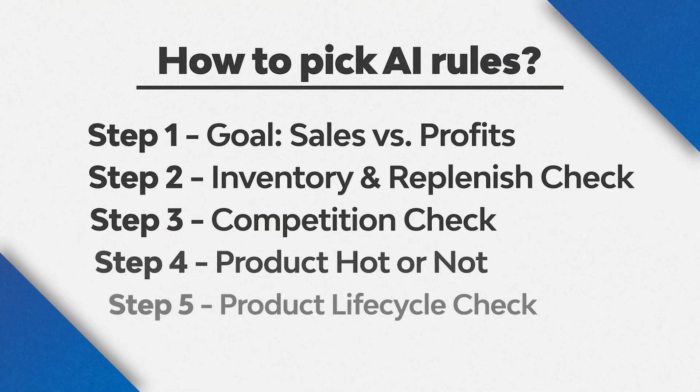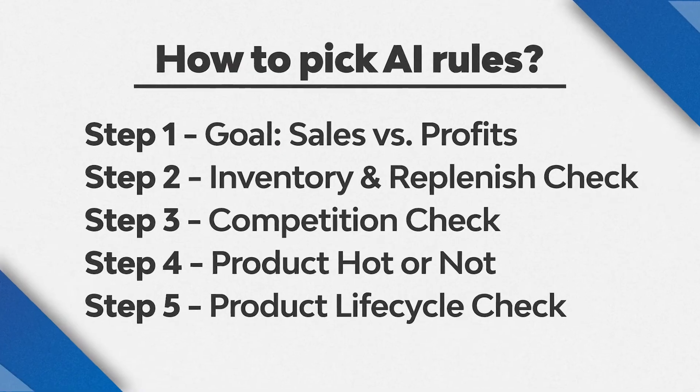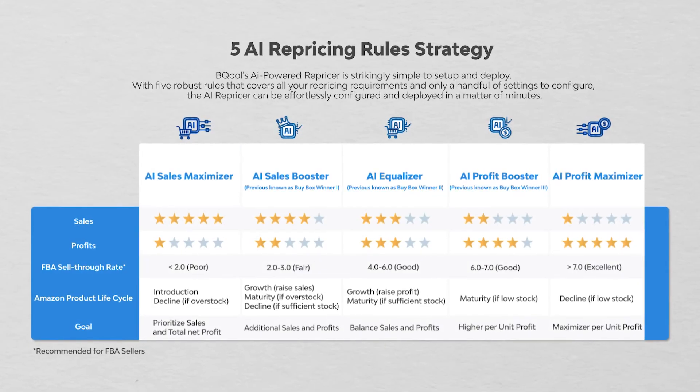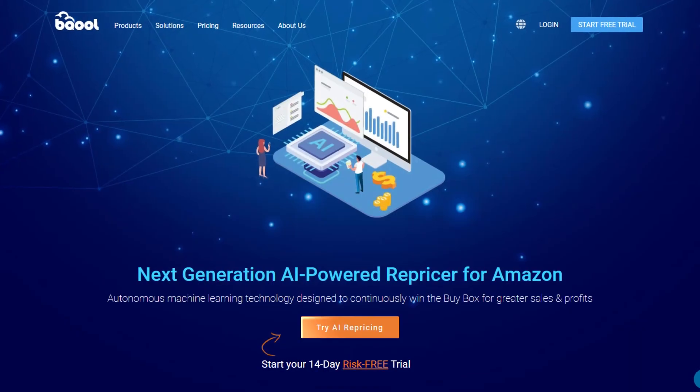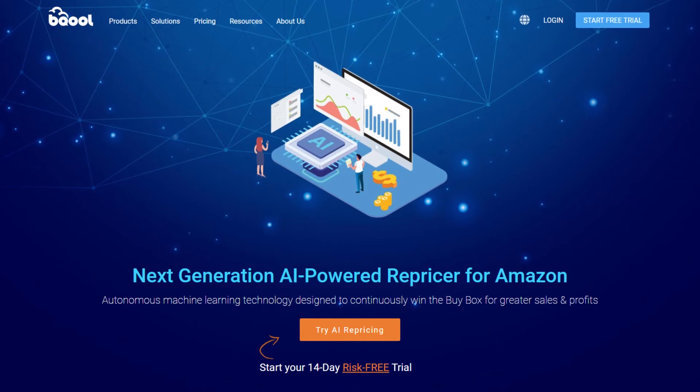In conclusion, our advice is to follow these five steps as a general guideline. If the rule you're using is not getting you the sales, change it to a more aggressive rule. Also keep in mind that sometimes it's not the rule — it's the min price you're setting. If the majority of your competitors are priced below your min price, you need to review your min price settings. If you're new to BQool, be sure to sign up — we offer a completely risk-free 14-day free trial with no credit card needed, and your free trial includes 10 free AI listings.